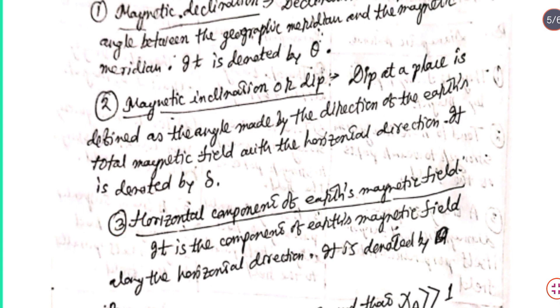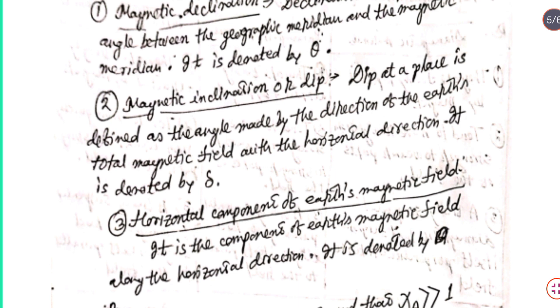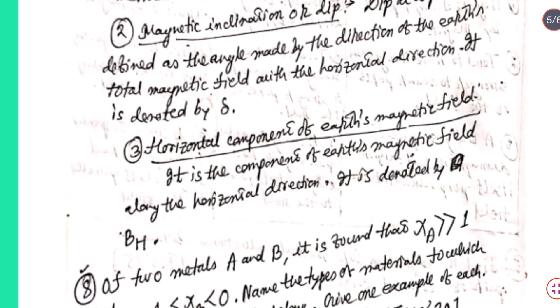Horizontal component of Earth's magnetic field: It is the component of Earth's magnetic field along the horizontal direction. It is denoted by B subscript H.